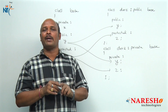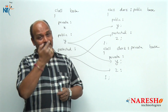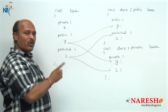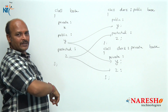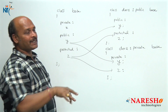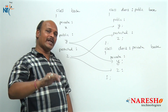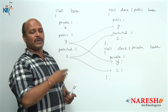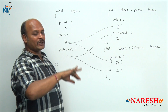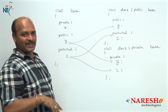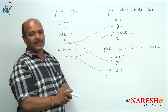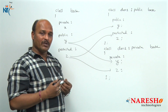Due to data hiding, only the member functions of that class can access the private data. Here, x is private data, so it is visible only to the member functions of that class. We are not directly able to access the private data of any base class in any derivation mode — meaning private members do not participate in inheritance. They should be accessed only through the base class member functions.